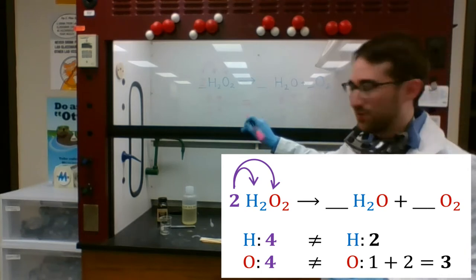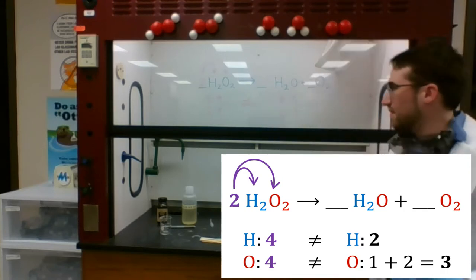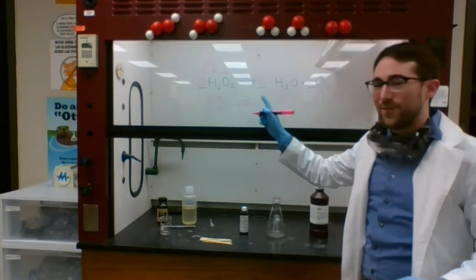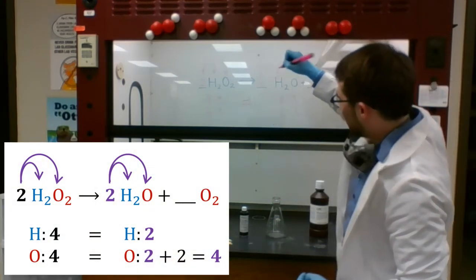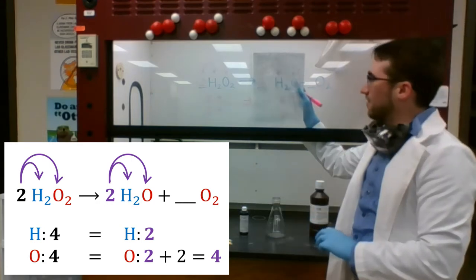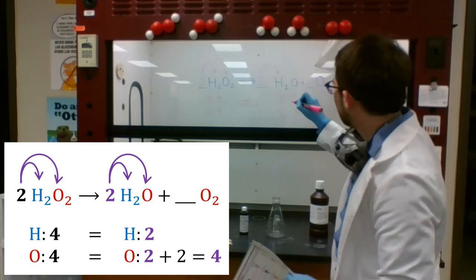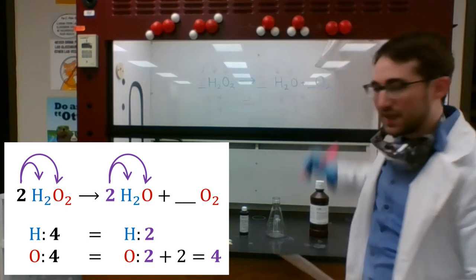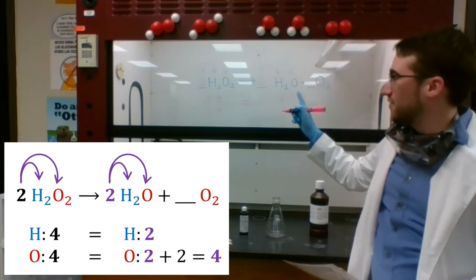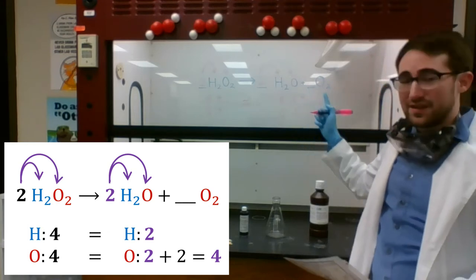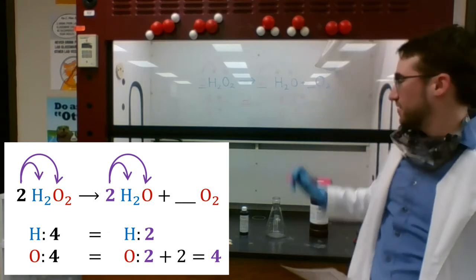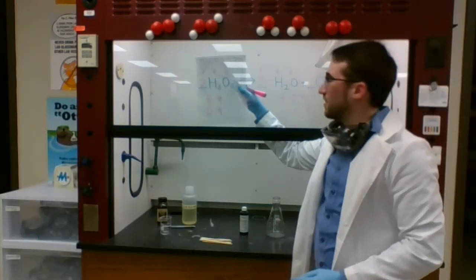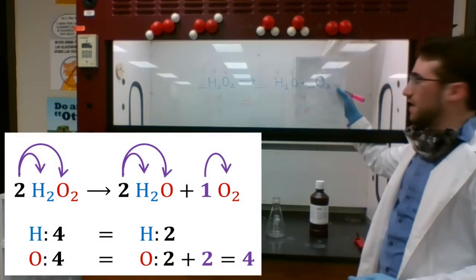So, I'm coming up short. They're not equal to each other. Let's get more H's. If I put a coefficient of two here, two times the two H's I already have should give me four H's, which matches. Two times the one O I have here gives me two O's plus the two O's I already have here, which is also four O's. Now, that matches. Two H2O2's should be able to turn into two H2O's and one O2.